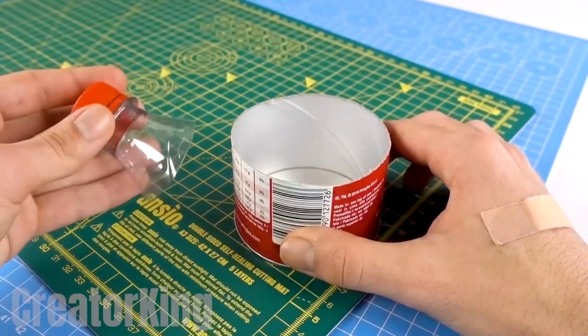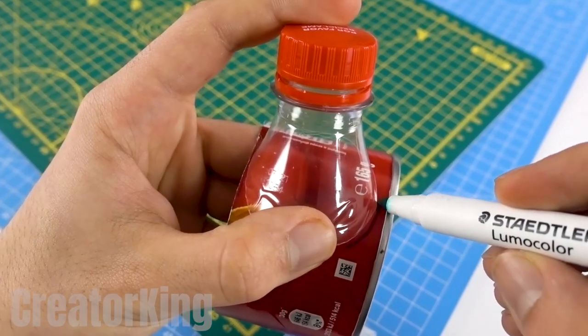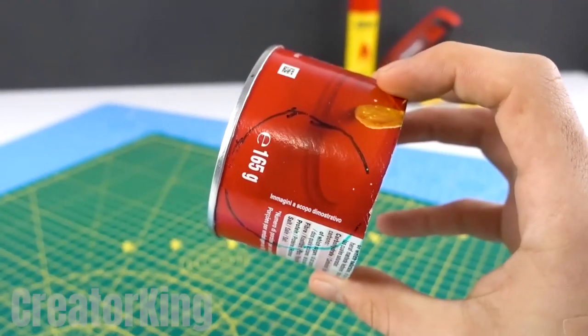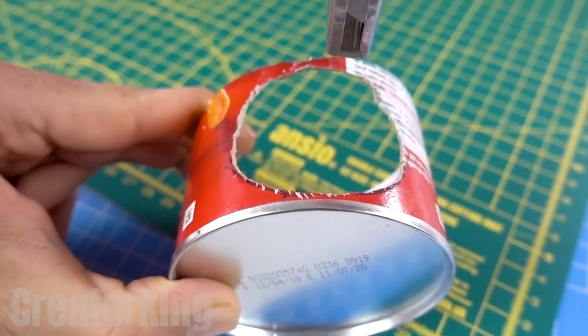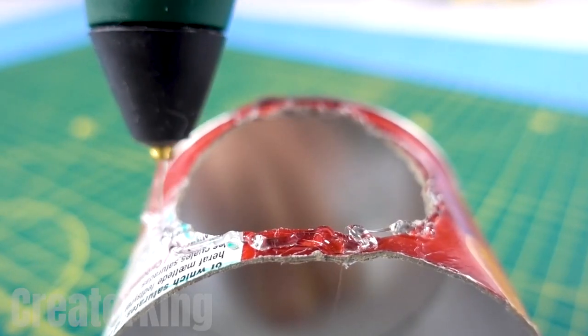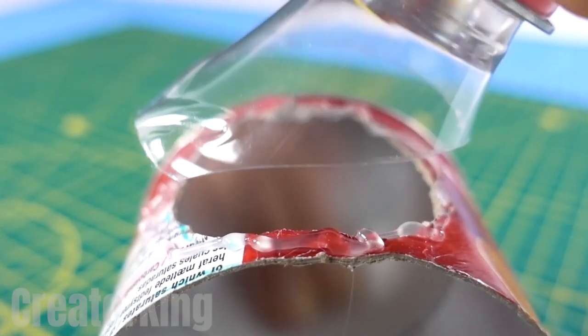Then we'll have to draw an outline of the nozzle on the piece of the can that we cut off at the beginning of the video and use a cutter to cut it out. Afterwards, we'll glue this piece onto the bottle with super glue. We'll come back to this mouthpiece creation later.